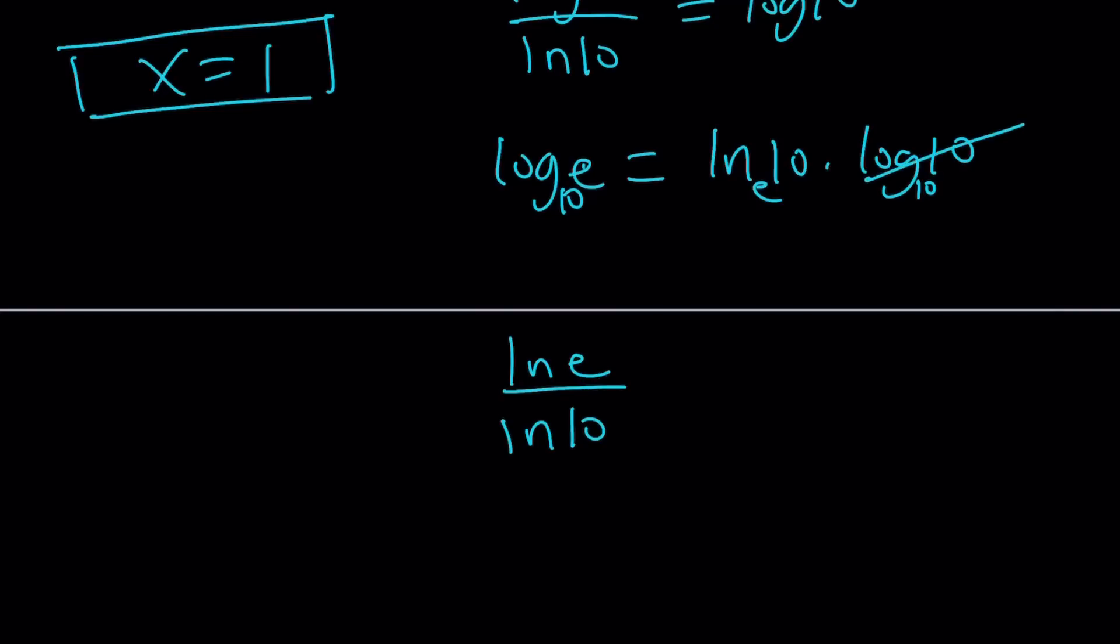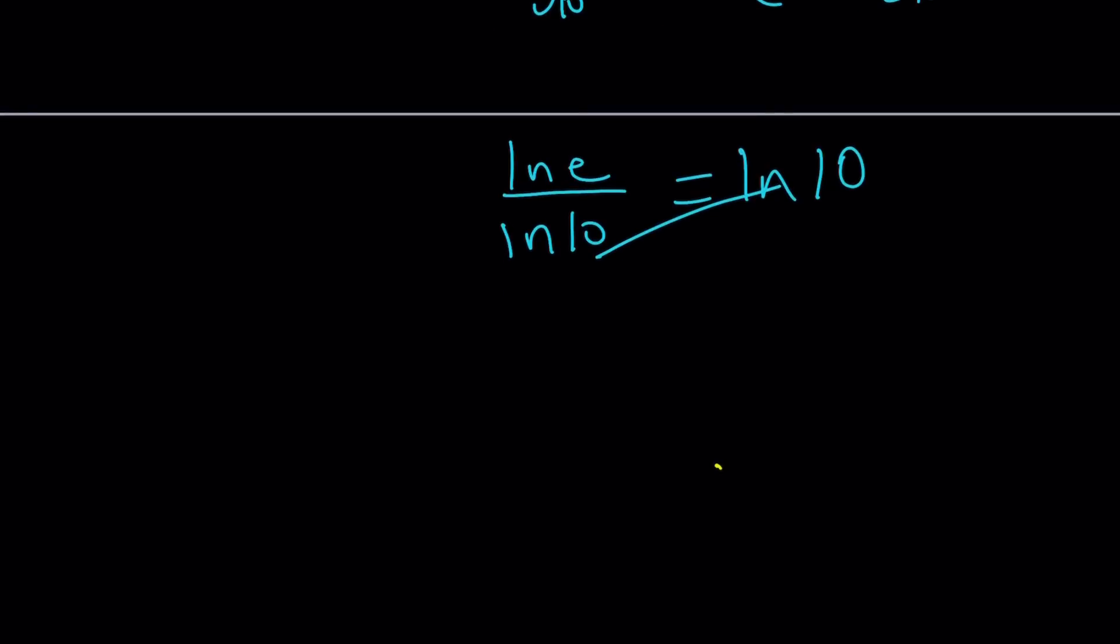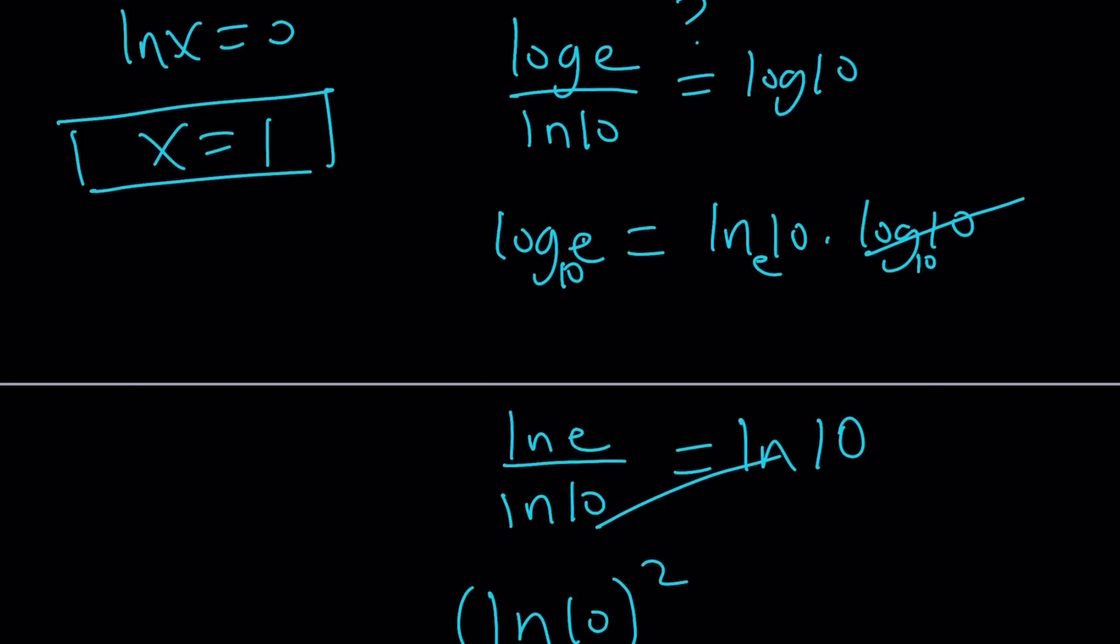And log 10 is 1, by the way. You can totally forget about it. So the question basically comes down to, is log e the same as ln 10? And the answer is no. Because when you cross multiply, you get ln 10 times ln 10, ln 10 squared. And ln 10 squared does not equal ln e because ln e is equal to 1. But this is not true at all.